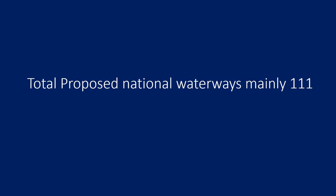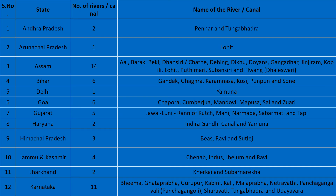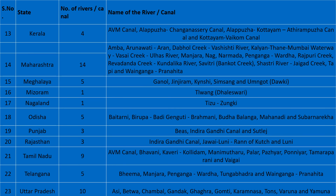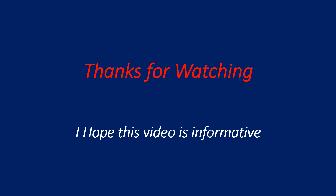Recently, the total proposed national waterways by state are mainly: Andhra Pradesh 111, Himachal Pradesh 2, Assam 14, Bihar 6, Delhi 1, Goa 6, Gujarat 5, Haryana 2, Himachal Pradesh 3, Jammu & Kashmir 4, Jharkhand 2, Karnataka 11, Kerala 4, Maharashtra 14, Meghalaya 5, Mizoram 1, Nagaland 1, Odisha 5, Punjab 3, Rajasthan 3, Tamil Nadu 9, Telangana 5, Uttar Pradesh 10.